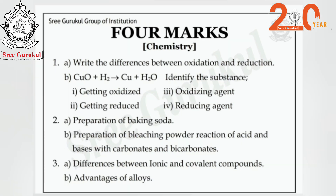For 4-mark questions, we can expect questions from the first lesson, such as writing the difference between oxidation and reduction, and given an equation, identifying the substance getting oxidized, getting reduced, the oxidizing agent, and the reducing agent. From the second lesson on acid-base and salts, we can expect 4-mark questions only on uses of salts — specifically baking soda preparation, bleaching powder preparation, and the reaction of acids and bases with carbonates and bicarbonates.